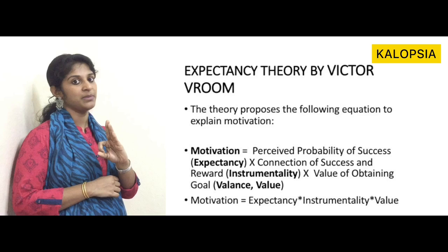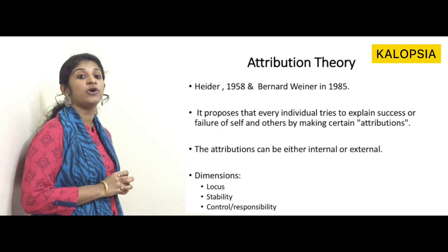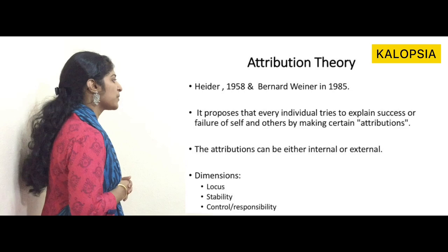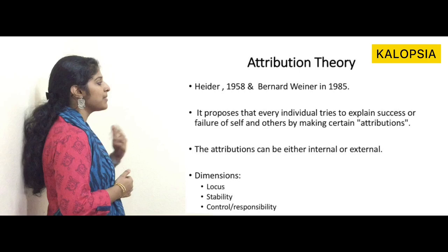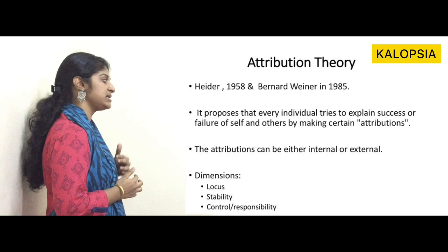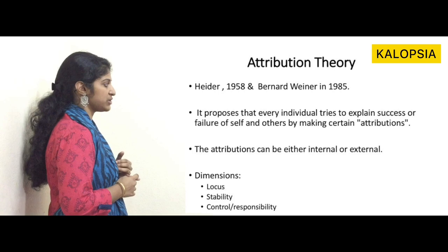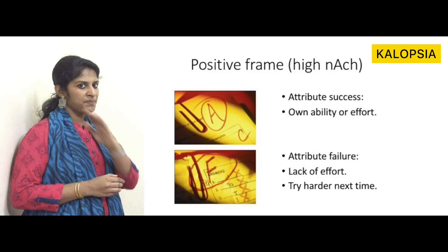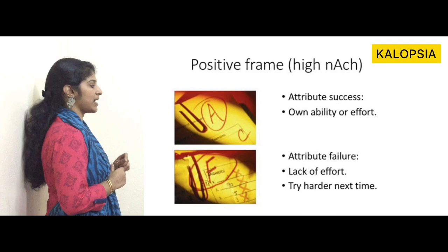The next theory is attribution theory, put forward by Fritz Heider and Bernard Weiner in 1985. It proposes that every individual tries to explain the success or failure of themselves and others by making certain attributions, which can be internal or external, and span dimensions like locus, stability, control, and responsibility. People with high motivation tend to attribute their success to their own ability or effort, and attribute failure to lack of effort, resolving to try harder next time.